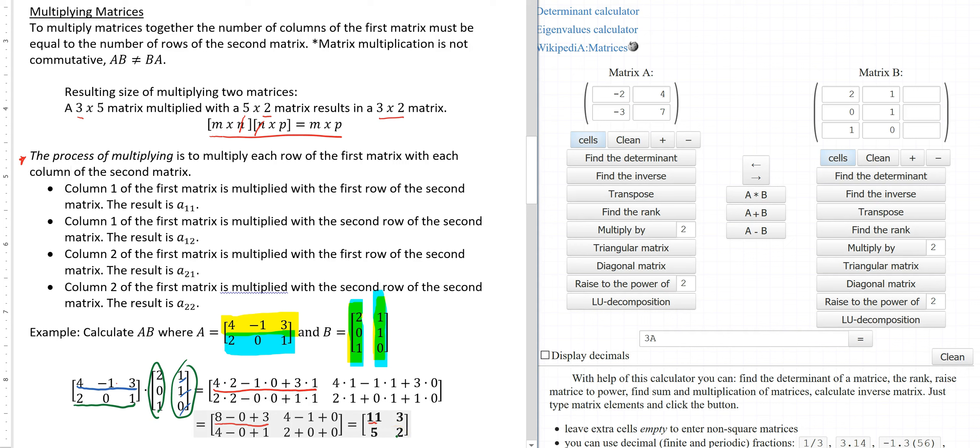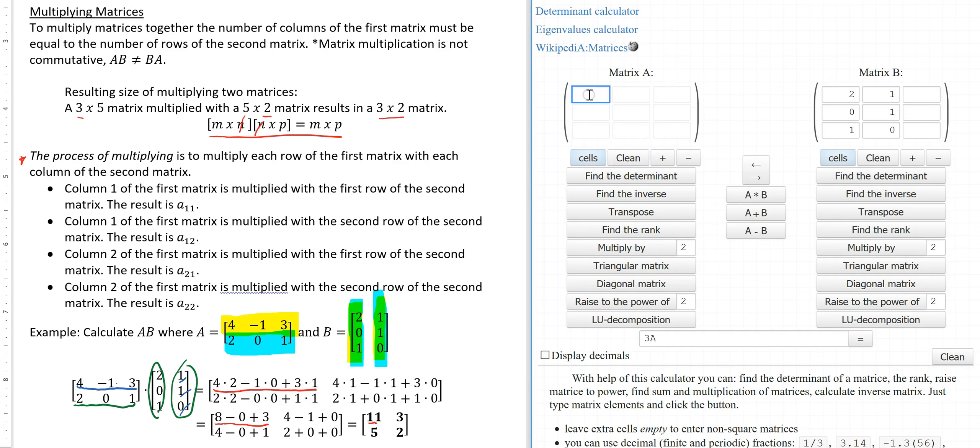Multiplication, as you can see, can be tedious and detailed. So what I like to do is I like to use an online tool to carry out all the multiplication. Let's say I have A written in here. So I have 4, negative 1, 3, 2, 0, and 1.